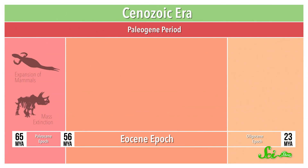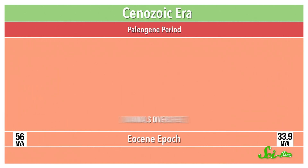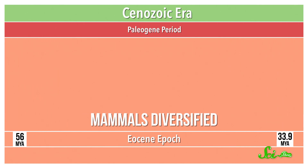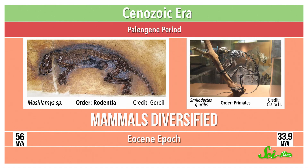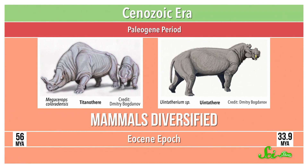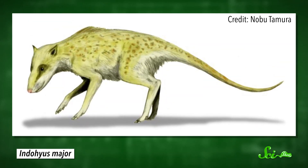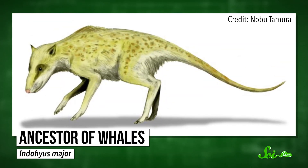By the Eocene Epoch, from 56 to 33.9 million years ago, mammals had diversified into some pretty neat forms, including orders that still exist, like rodents and primates, but also some that don't, like the enormous and bizarre titanotheres and eutotheres. One little antelope-like mammal had even wandered into the sea to become the ancestor of whales.